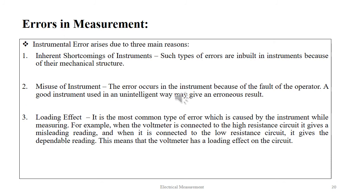Instrumental errors arise due to three main reasons. First, inherent shortcomings of the instrument — such errors are inbuilt because of the mechanical structure. Second, misuse of the instrument — the error occurs because of the fault of the operator; a good instrument used in an unintelligent way may give an erroneous result. Third, loading effect — the most common type, caused by the instrument while measuring. For example, when a voltmeter is connected to a high resistance circuit it gives a misleading reading, but when connected to a low resistance circuit it gives a dependable reading, indicating a loading effect on the circuit.